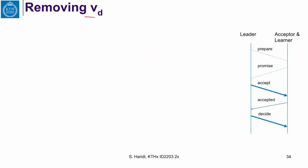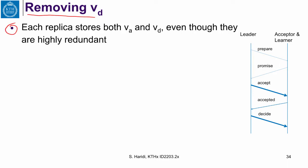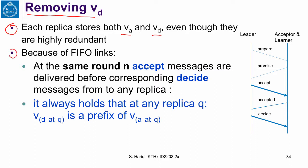So now we are looking at how to remove VD. Every replica stores the accepted sequence and the decided sequence, even though they are redundant. But because of the FIFO link, and also at the same round, it means we are talking in a round where there is one proposer, which is a leader, accept messages are delivered before corresponding decide messages to any replica. So you can see here, if a leader sends an accept message to a replica, because of FIFO order of the channel, this accept message will be delivered here before the decide message is delivered.